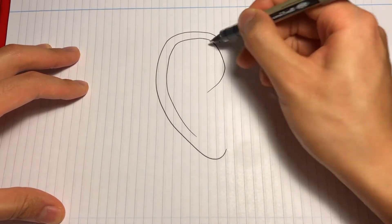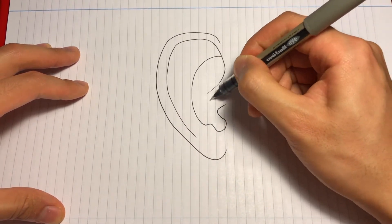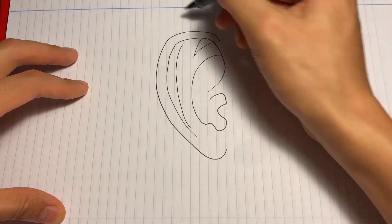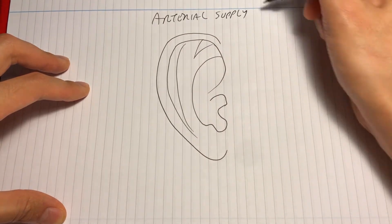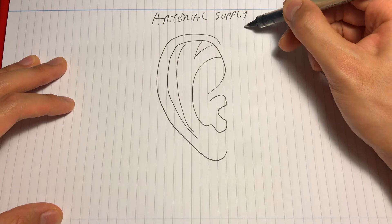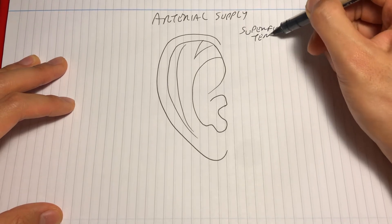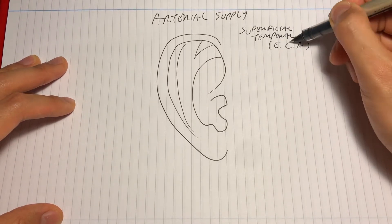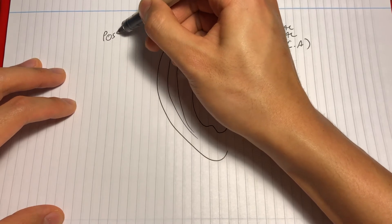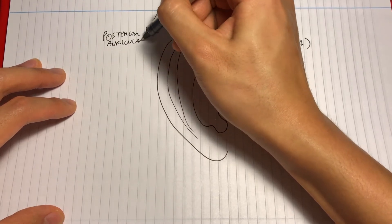Now let's look at the arterial supply of the pinna. This comes from the external carotid artery in the form of the superficial temporal artery anterior to the pinna, and posteriorly, the posterior auricular artery.